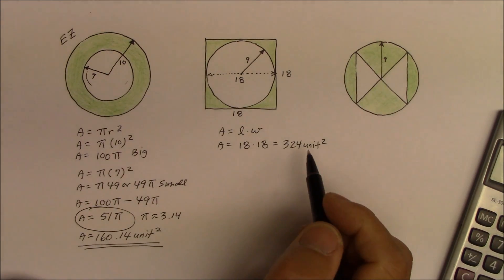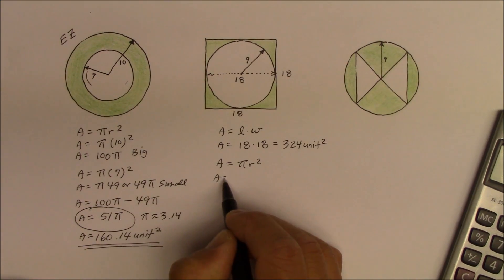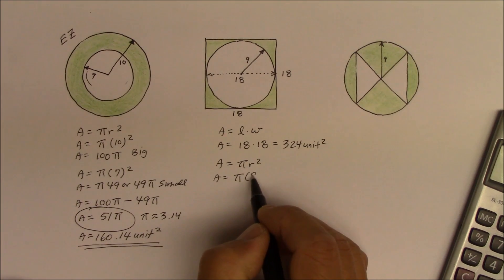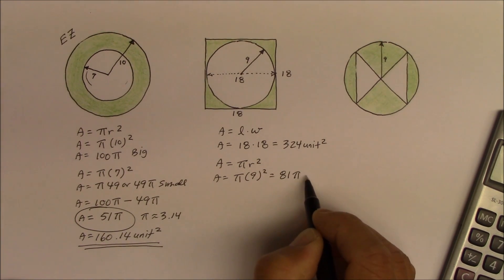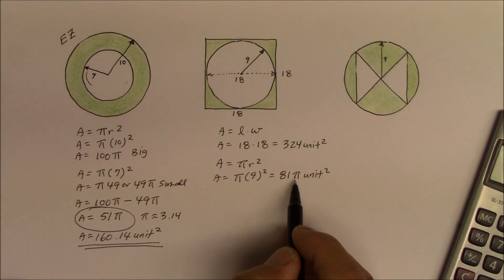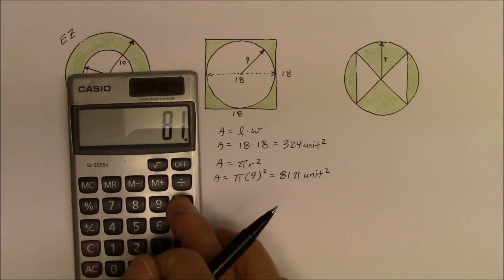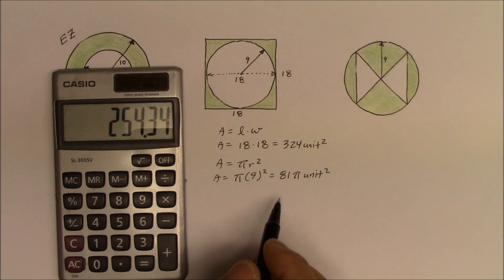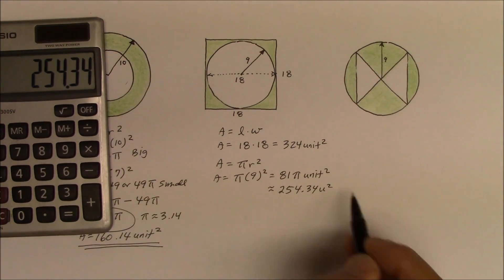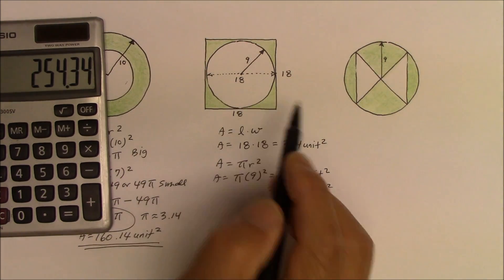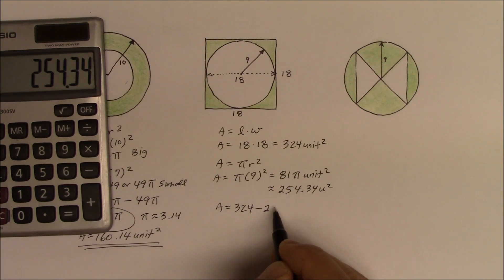Now we find the area of the circle and subtract it from the square. Area equals pi r squared — pi times 9 squared — so the area is 81 pi units squared. Since we need to subtract, we convert using pi approximately 3.14: 81 times 3.14 gives approximately 254.34 units squared. To find the remaining green shaded area, we take the square — 324 — minus the inner circle — 254.34.